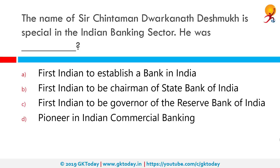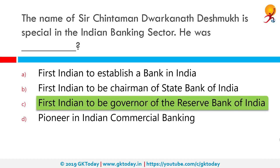The name of Sir Chintaman Dwarkanath Deshmukh is special in the Indian banking sector. Why? He was the first Indian to be governor of the Reserve Bank of India. He was an Indian civil servant appointed as the first Indian governor of the RBI in 1943 by the British Raj authorities, and subsequently served as finance minister in the Indian Union cabinet.